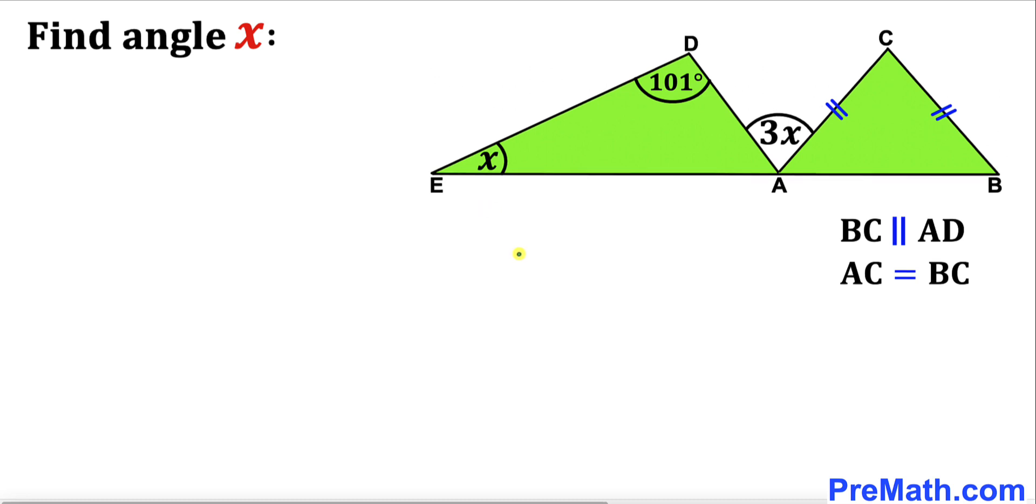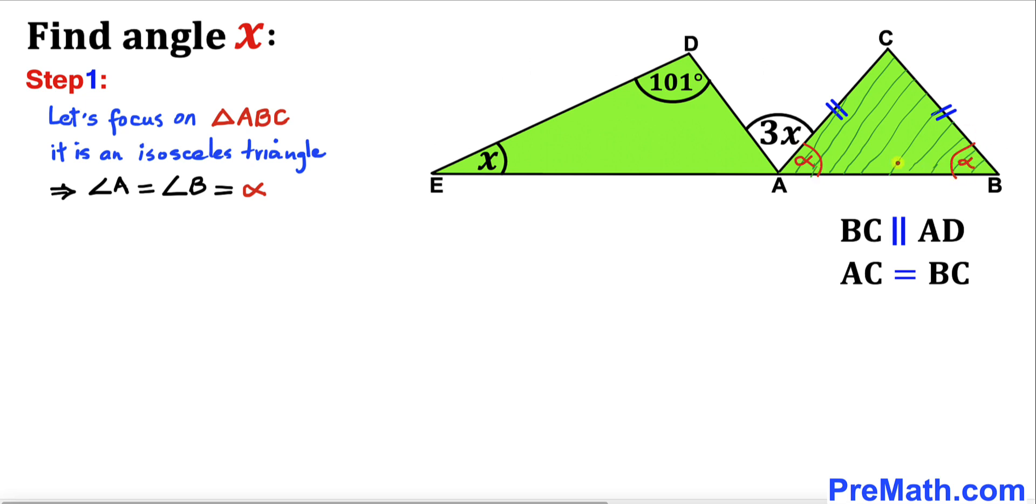Let's get started with the solution. Here's our first step: let's focus on triangle ABC. We know that this is an isosceles triangle since its two side lengths are equal. Therefore, its two angles, angle A and angle B, are equal. Let me call them alpha.